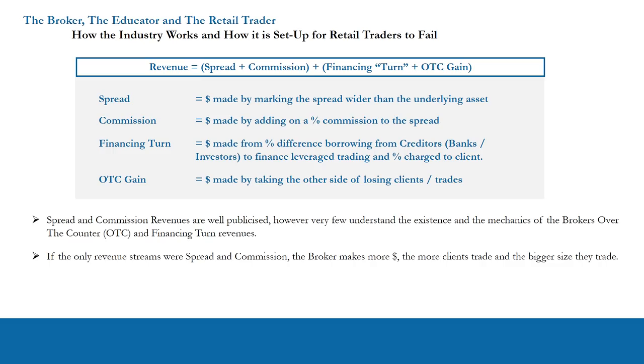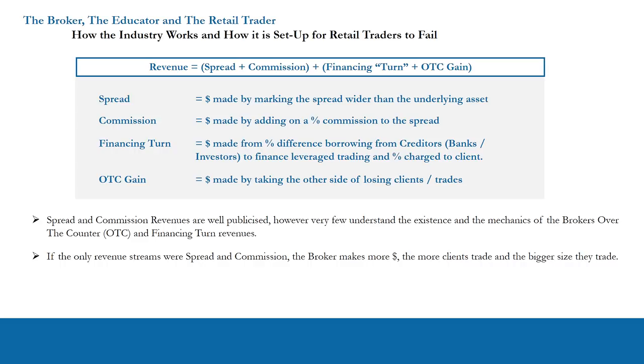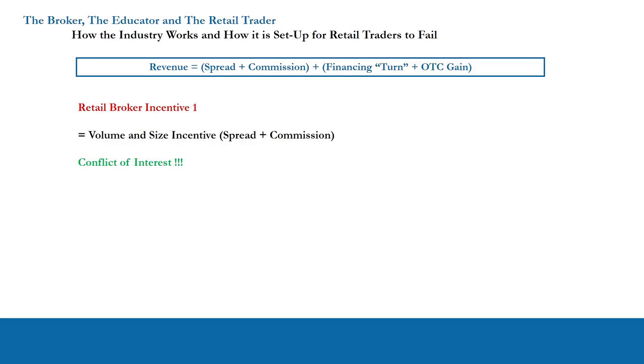The next two conflicts of interest are not so obvious: the financing turn and the OTC gain. OTC means over-the-counter — CFD contracts are over-the-counter contracts. When the broker takes the other side and makes money, it's called an OTC gain. The first retail broker incentive is volume and size: trading as frequently as possible in the biggest size possible. That's how they get paid.